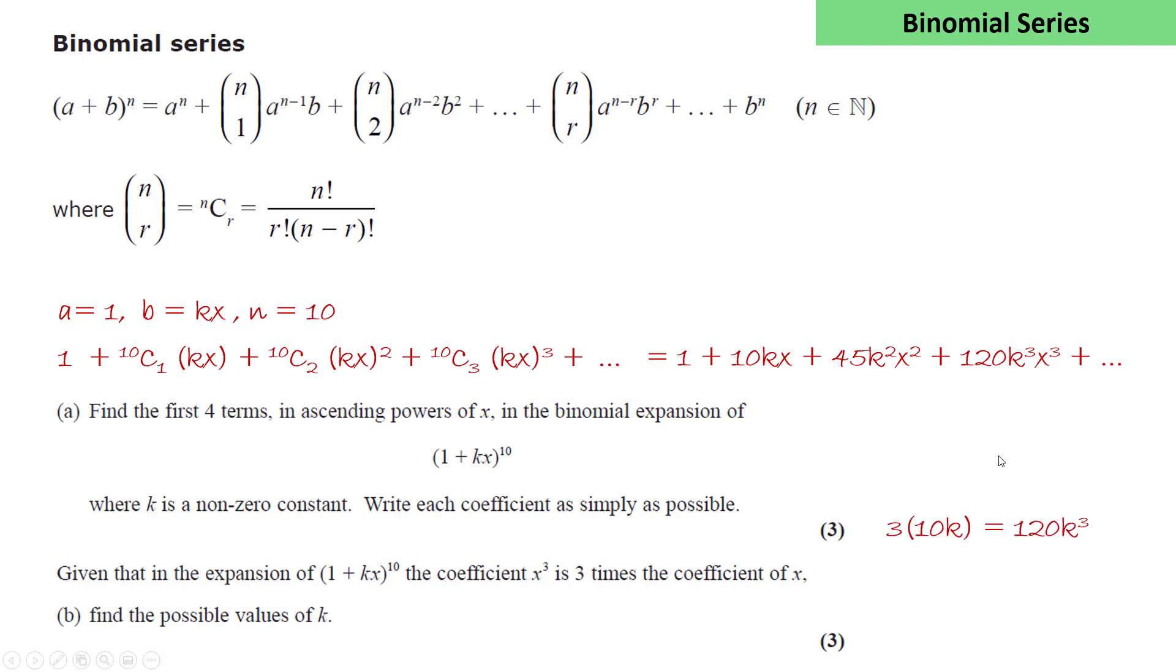So here, the coefficient in x is 10k. The coefficient of x³ is 120k³. So we can write this equation, which is easily solved to get k is plus or minus 1/2.